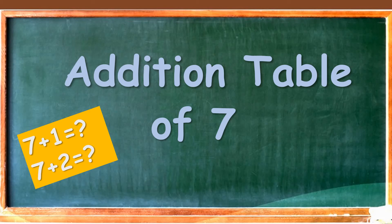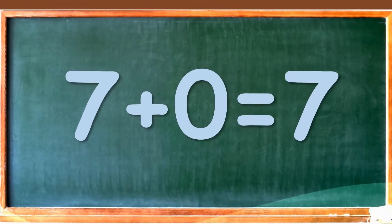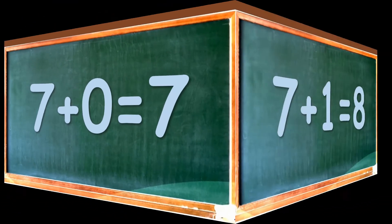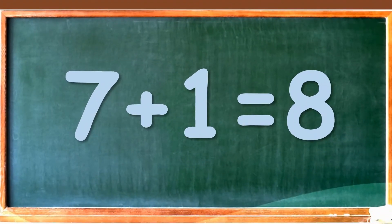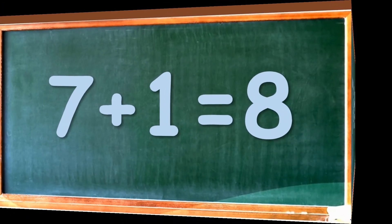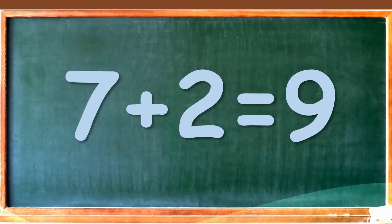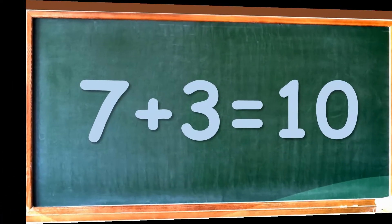Hello friends, welcome to our channel. Let us learn the addition table of seven. So let us start: 7 plus 0 is equal to 7, 7 plus 1 is equal to 8, 7 plus 2 is equal to 9.